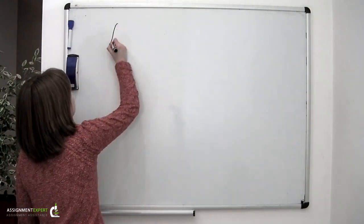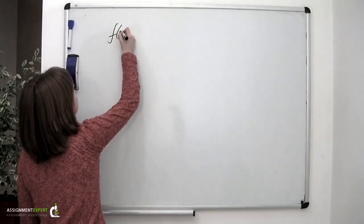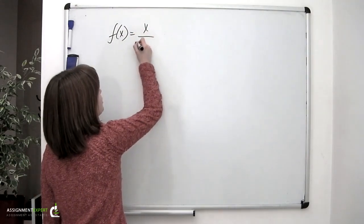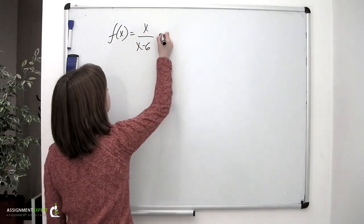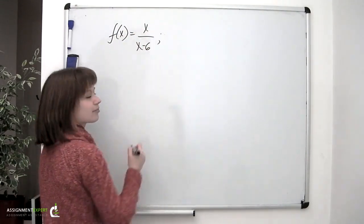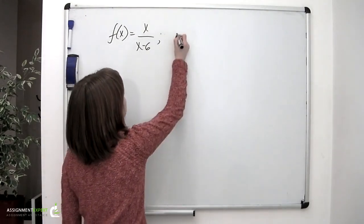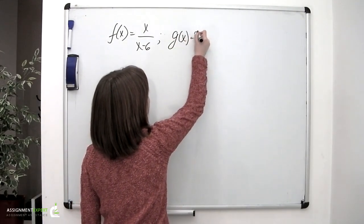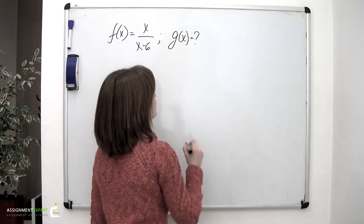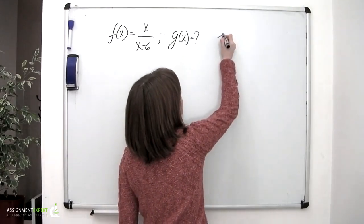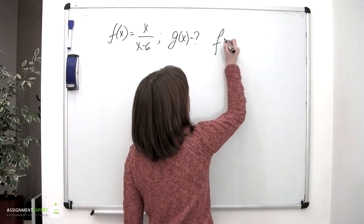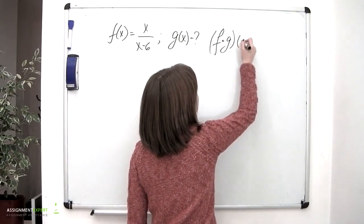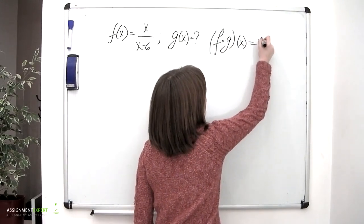Let f be equal to x over x minus 6. Find the function g so that the composition f of g of x will be equal to x.